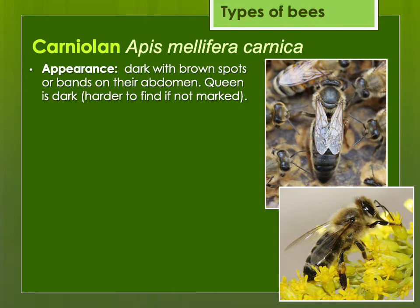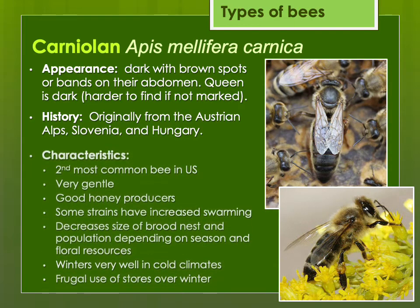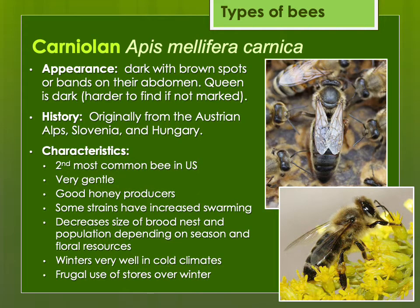The Carniolans are probably the second most common or popular type of bee in the U.S. They do tend to be darker, so queens are a little harder to find. They originally came from central and eastern Europe — Austria, Slovenia, and Hungary. They're very gentle; I can open them on a warm summer day during the honey flow and they pretty much ignore me. Some strains may have increased swarming, but if handled properly I find they don't tend to swarm necessarily more than other types. They're very responsive to changes in floral resources, so they'll shut down brood rearing fairly quickly once pollen stops coming in. They're frugal, don't overuse stores over winter, and tend to winter very well in cold climates.